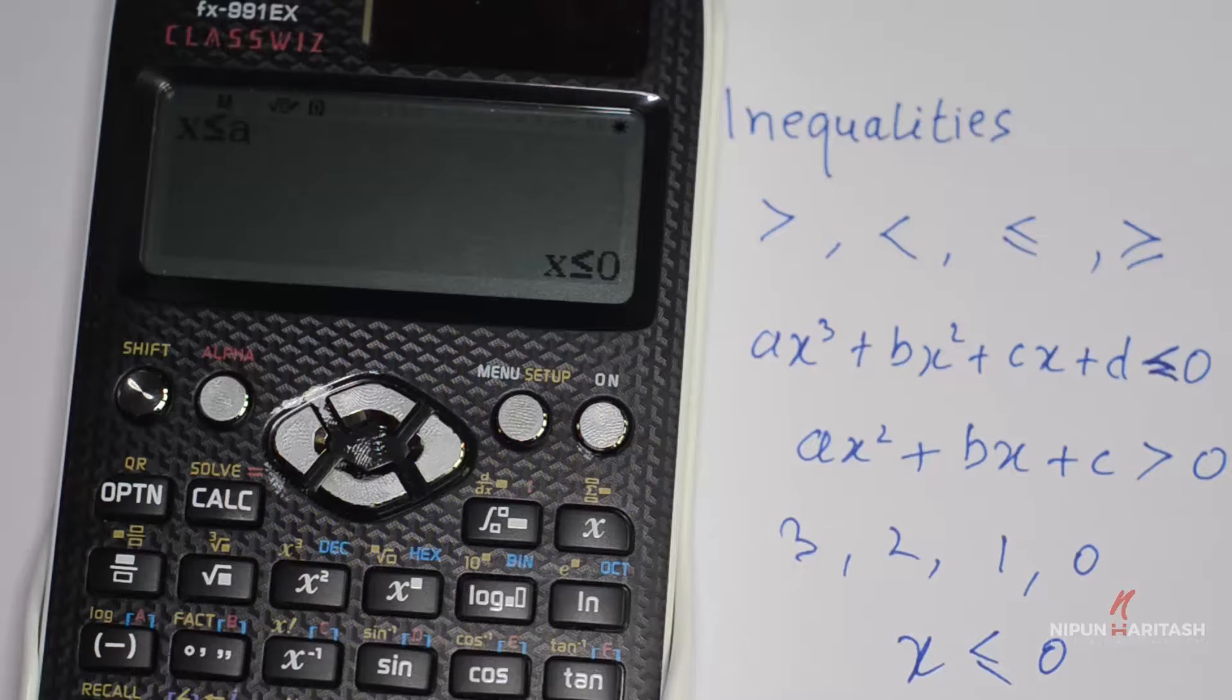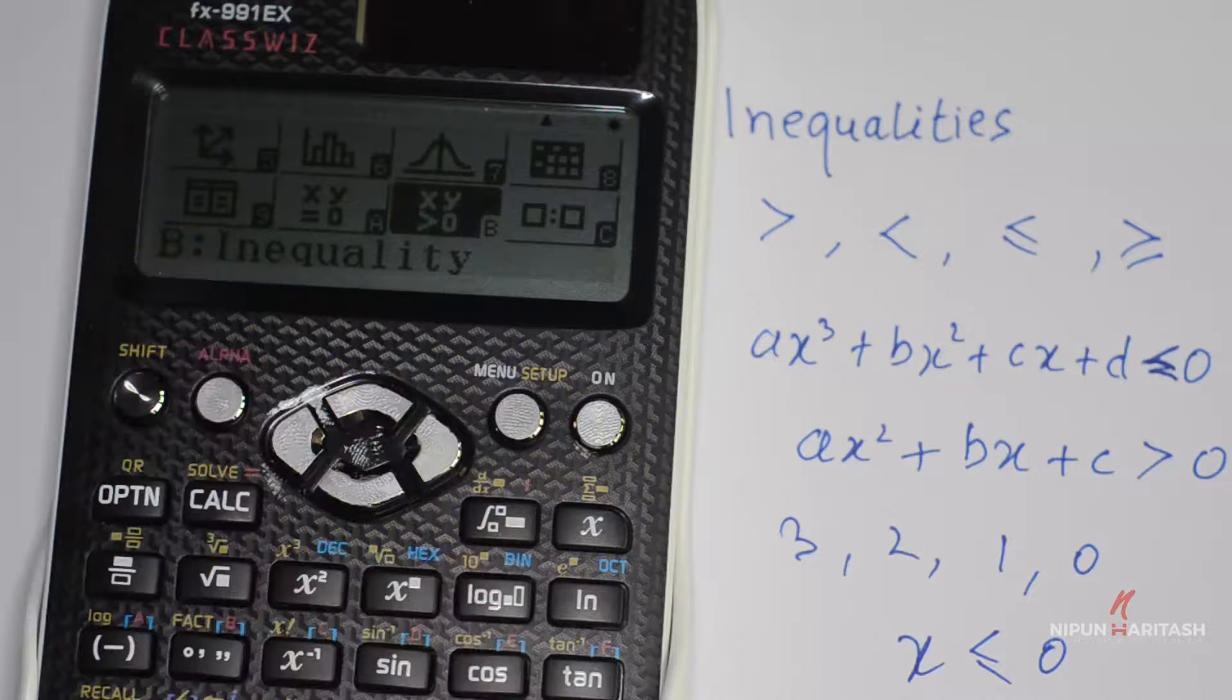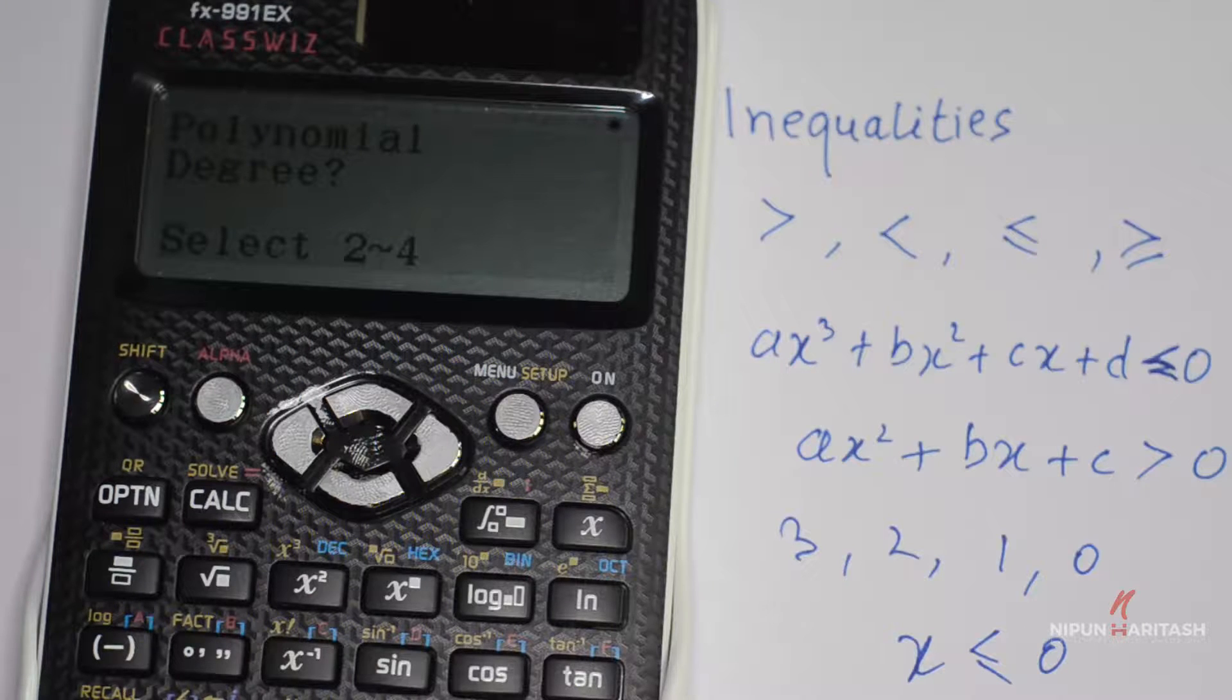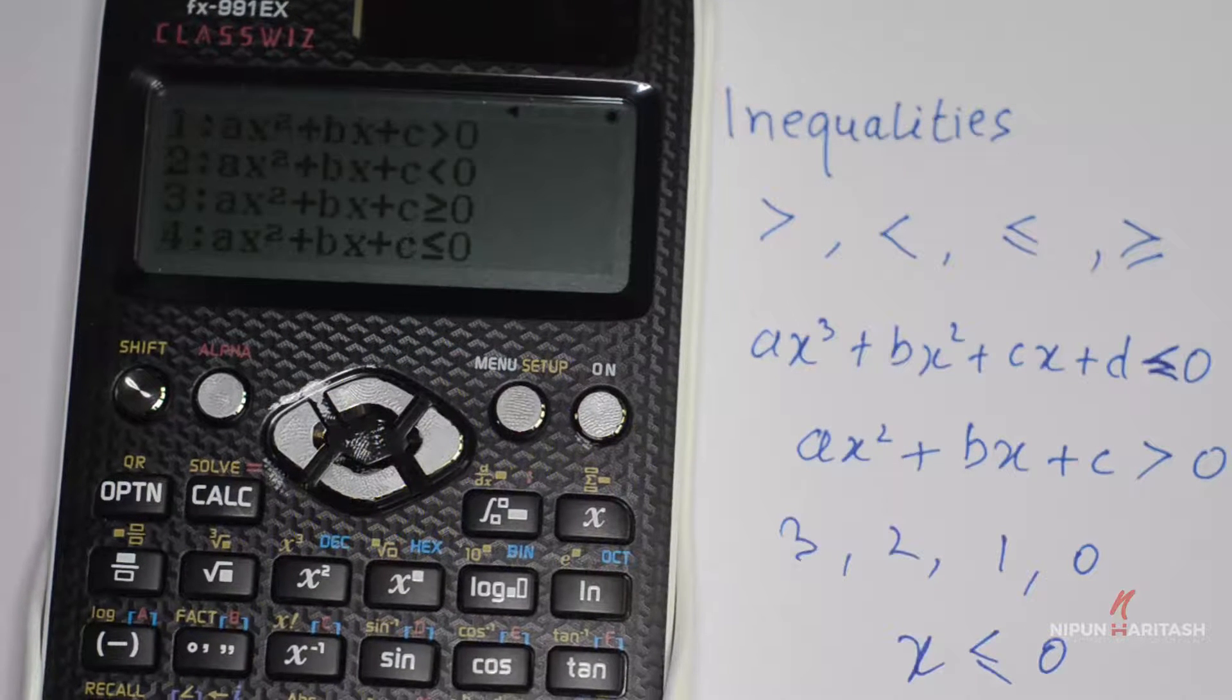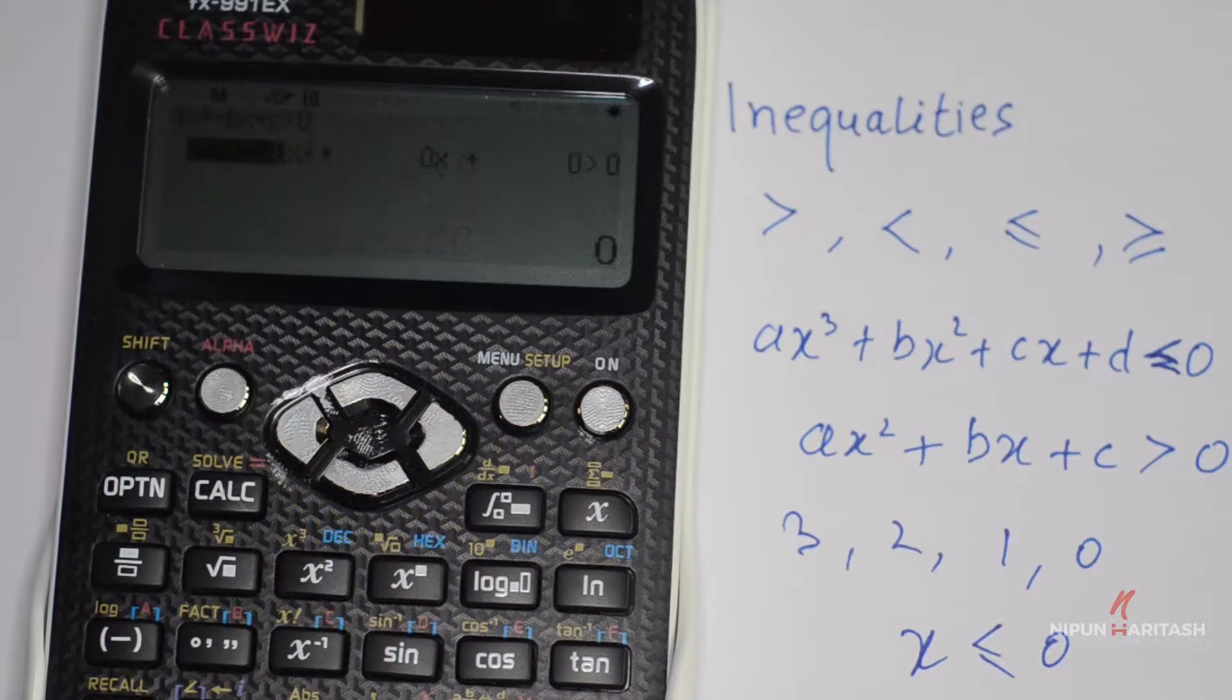Similarly, you can go back to mode, press B, and let's select 2 this time around. Ours is the case which is represented by 1, so you can put any arbitrary coefficients.